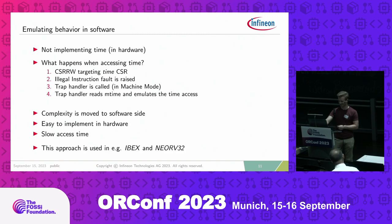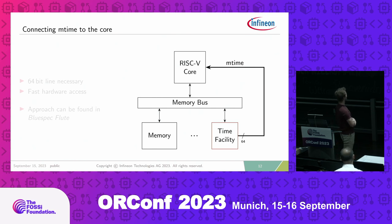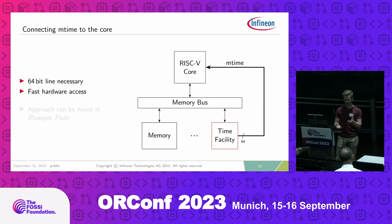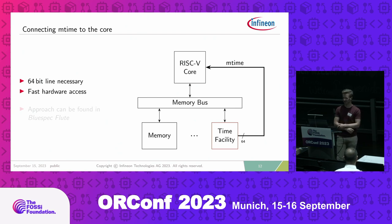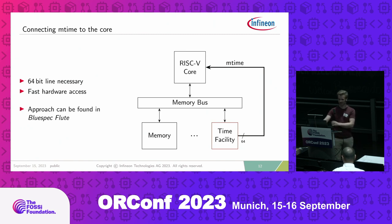Another approach is to use a dedicated signal line, routing mTime directly to the core. This is fairly easy conceptually but costly in area, because it requires a 64-bit line routed potentially over the whole chip. For example, if the normal memory bus is only 32 bits wide, this would be extremely large. However, it does provide fast hardware access.